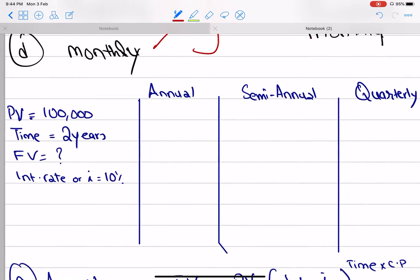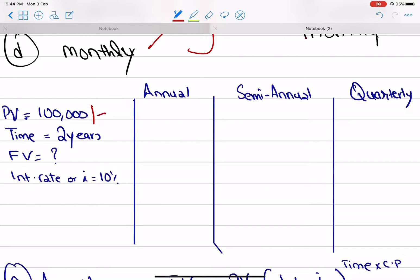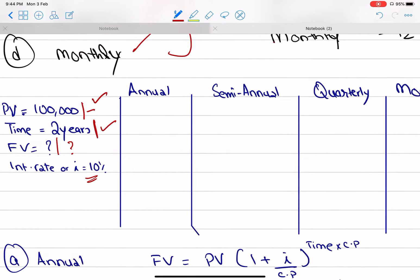We have the present value, which is $100,000. The time is 2 years. We will find the future value, and our interest rate is 10%. If we extract the data, we want to invest $100,000. If we get an annual return, we will get a return in 2 years and find our future value at 10% per year.